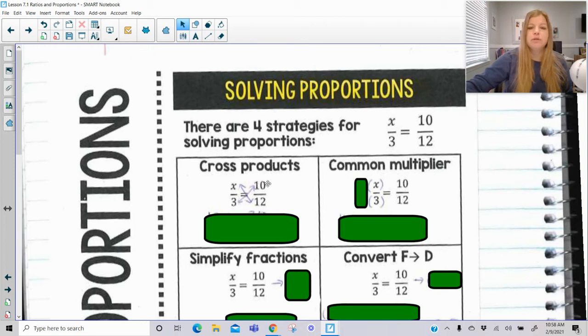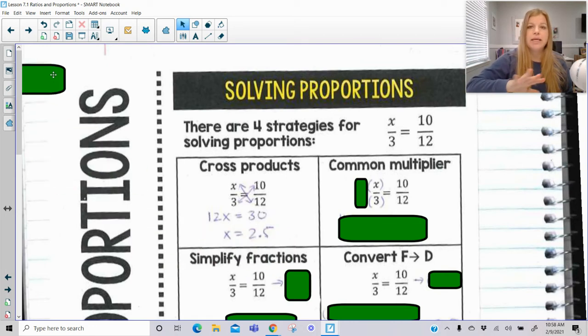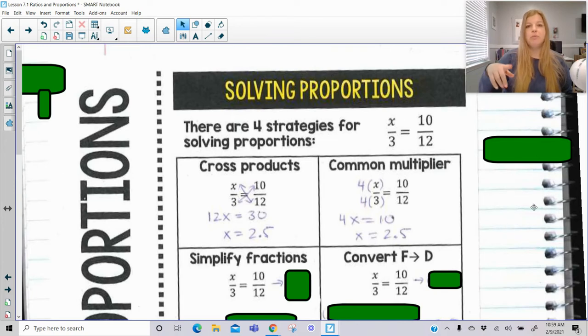If I have x over 3 equals 10 over 12, I could use cross-products. x times 12 is 12x, 3 times 10 is 30. Divide both sides by 12 and I get 2.5. Nice, clean, simple. I can also look for what's called a common multiplier. I notice I have 3 as a denominator and 12 as a denominator. How do I turn 3 into 12? I multiply by 4. So if the denominator gets multiplied by 4, then I would multiply my numerator by 4. This means 4 times x should equal 10, and I also get 2.5. So you can look for a common multiplier.